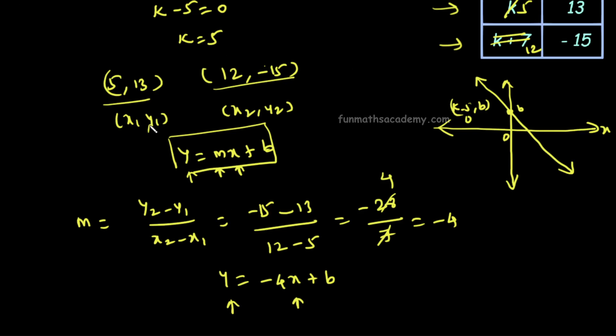These two points satisfy the line equation. We can substitute either point. Let's use the point (5, 13).